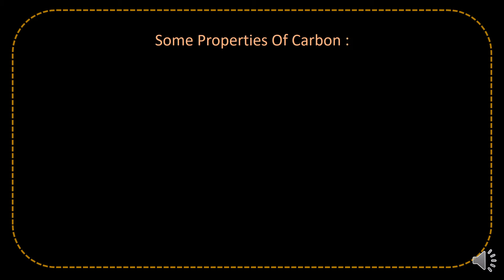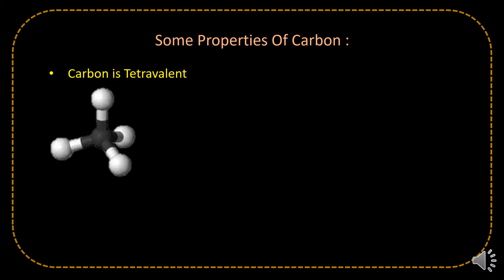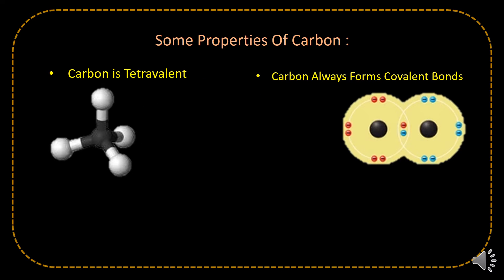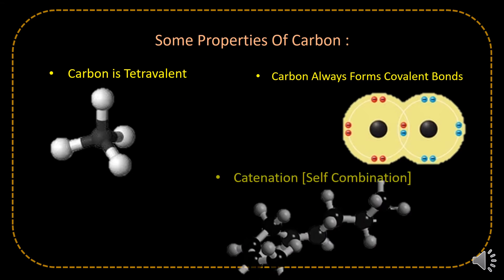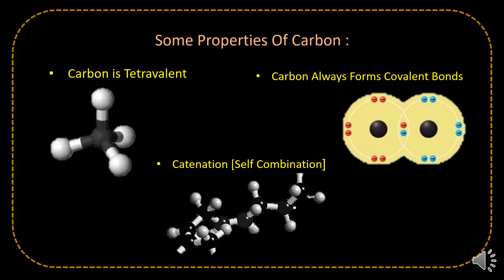Welcome back everyone to Edudos. Some properties of carbon are: carbon is tetravalent, carbon always forms covalent bonds, and the most beneficial property of carbon is catenation — the self-linking or self-combining process. You have to understand these three basic properties of carbon in depth, as covered in the lecture.